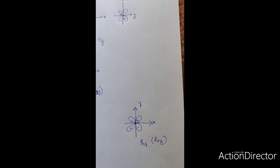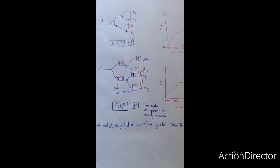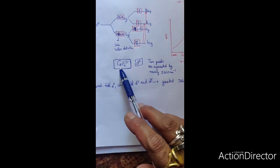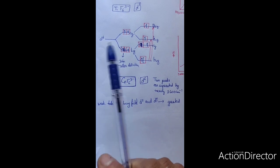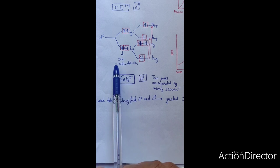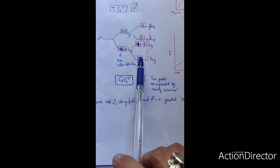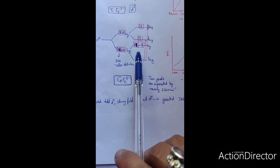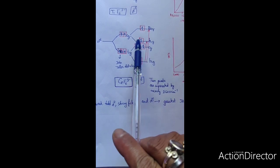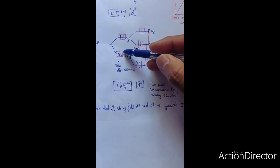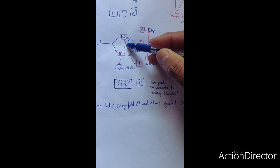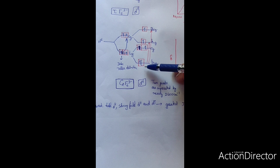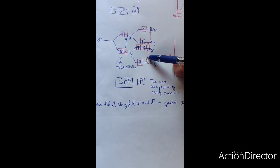Now we can see how Jahn-Teller distortion affects the width of an electronic spectrum. For D6 configuration — for example, CoF6³⁻ — because the T2g set is asymmetrically filled, Jahn-Teller distortion occurs. Due to this, T2g splits into B2G and Eg, and Eg splits into B1G and A1G. If it were a simple octahedral complex, only one transition would occur — from T2g to Eg. But due to Jahn-Teller distortion, the electron can excite from B2G to B1G or from B2G to A1G.